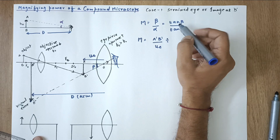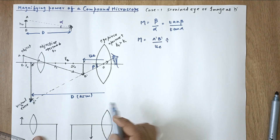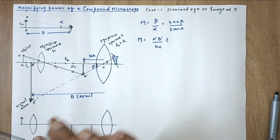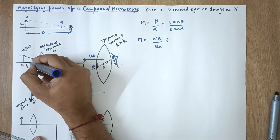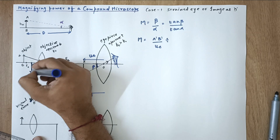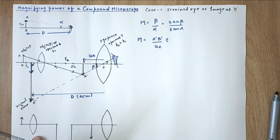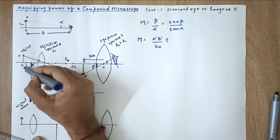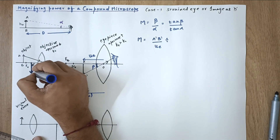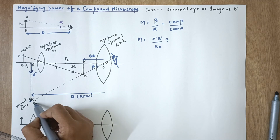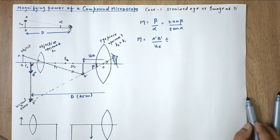For tan alpha, we ignore the two lenses for a moment. Imagine the same object of height ho placed at distance D in front of the eye. Let's call this imaginary object A'''B''' (B triple dash). From this triangle, tan alpha = A'''B''' / D, which equals ho / D, where ho is the height of the original object AB.